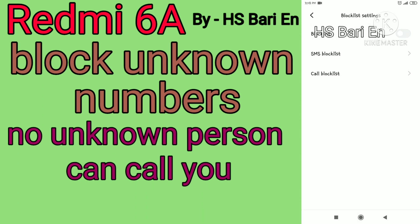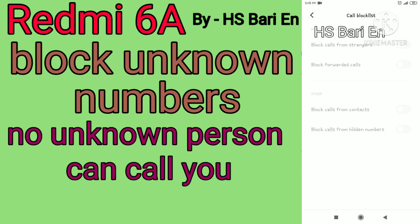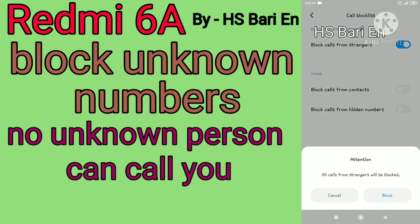You have to first enable the first option, Block List. Just enable this and all your functions will appear. Now you have to go to the third option, Call Block List. Open this Call Block List and here you will get the first option: Block Calls from Stranger. Just enable this.